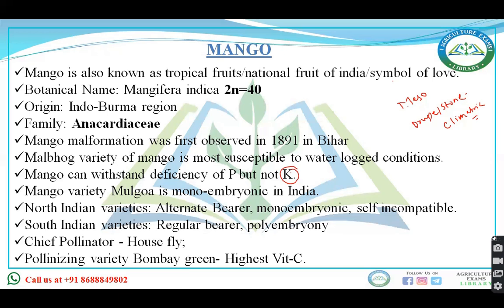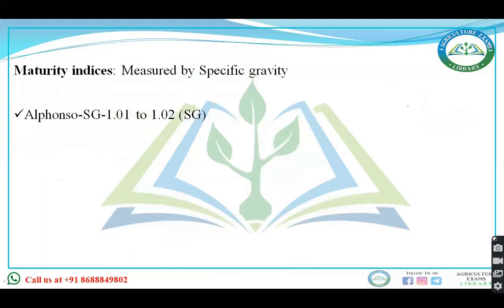When you talk about the Bombay Green variety of mango, they are the pollinizing variety. Pollinizing variety means they have the highest vitamin C.